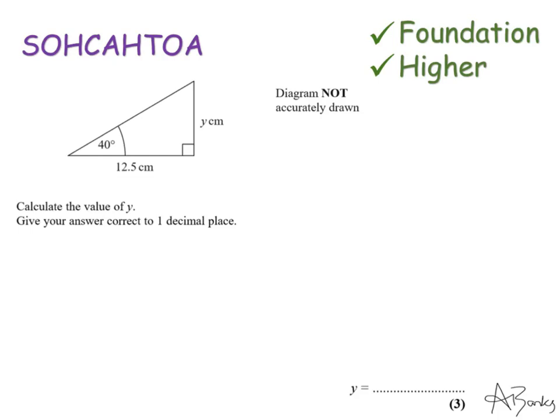This question says calculate the value of y, give your answer correct to one decimal place. The first step with any SOHCAHTOA question is to label the sides on my triangle. We've got three standard words to label these. The first one, probably the easiest to label, is the hypotenuse. You might have heard this word before with Pythagoras. The hypotenuse is the longest side. I'm going to label my longest side here H for hypotenuse.